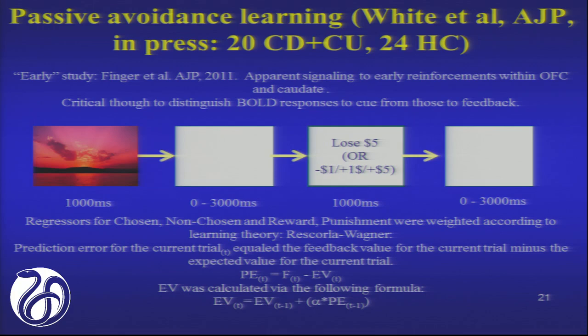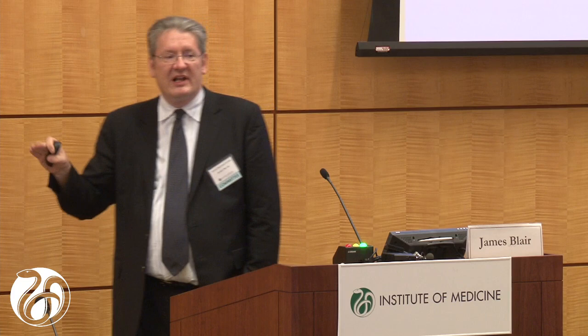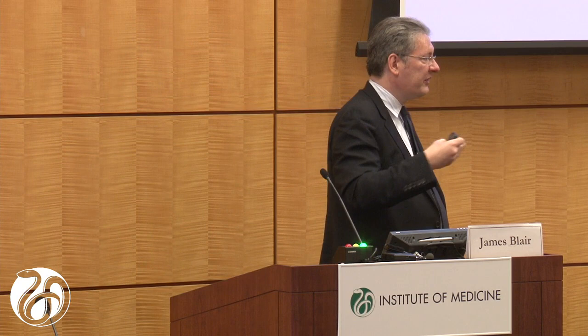In the task, stimuli appear and you can choose to respond or not. If you respond, you'll either get a reward — winning $5 or $1 — or a punishment, losing $5 or $1. Any stimulus can yield reward or punishment, but the 'good' stimuli more often than not yield reward, and the 'bad' stimuli more often than not yield punishment. There are only four stimuli to learn about — a relatively simple task, though people do struggle. It directly mirrors a rodent paradigm where rats respond to smells associated with reward or withholding of reward.